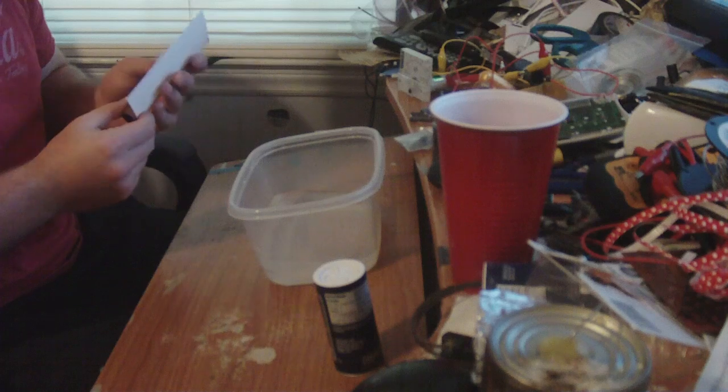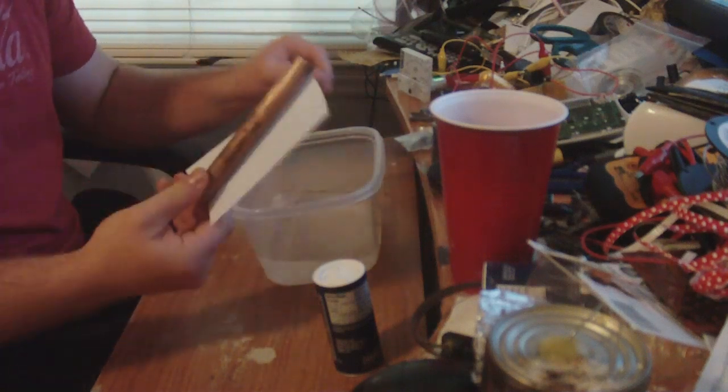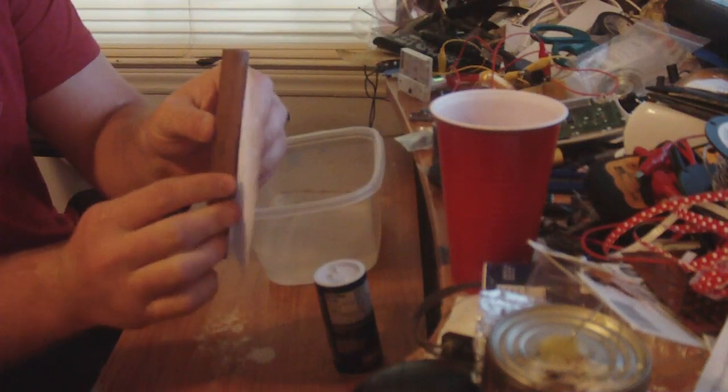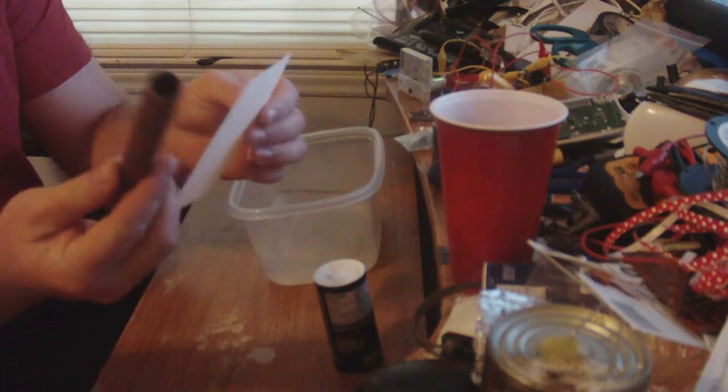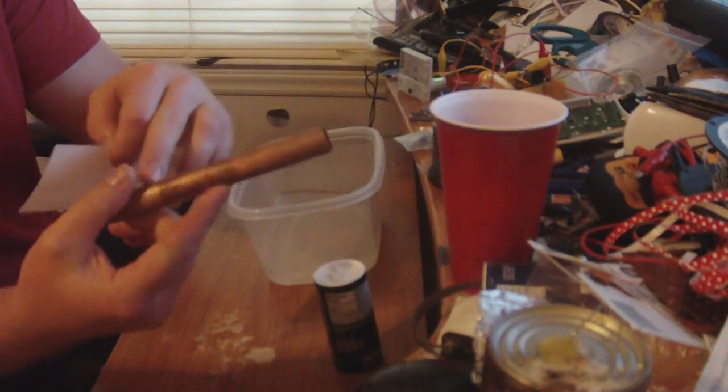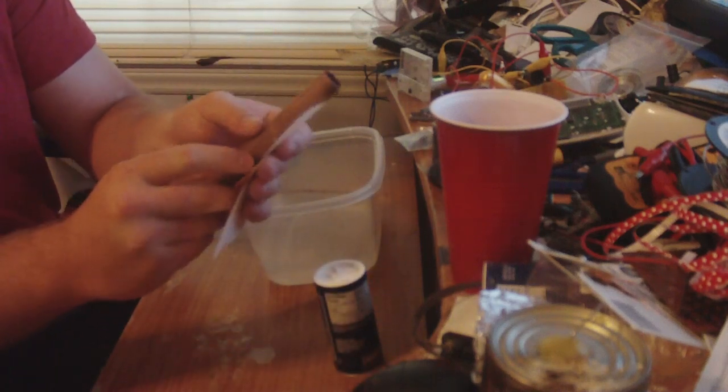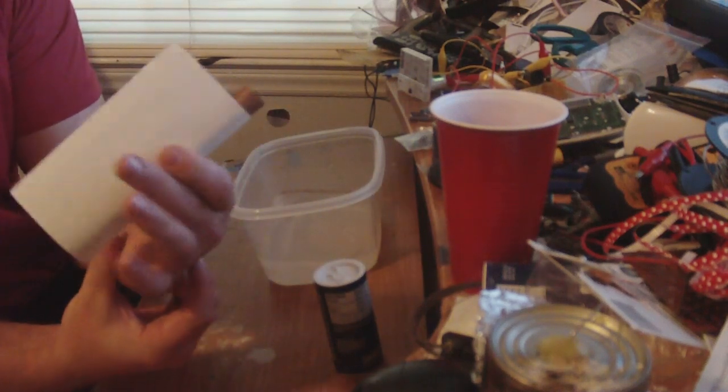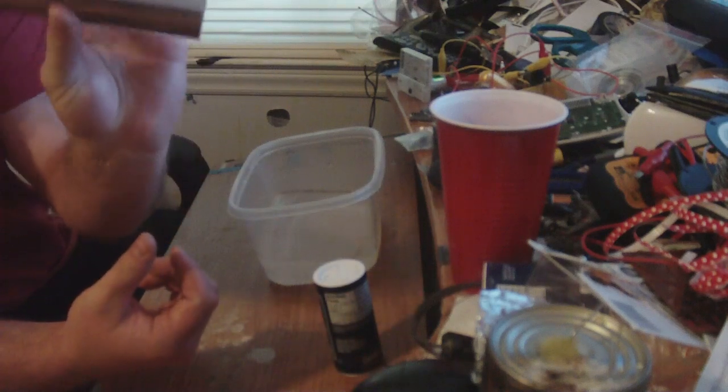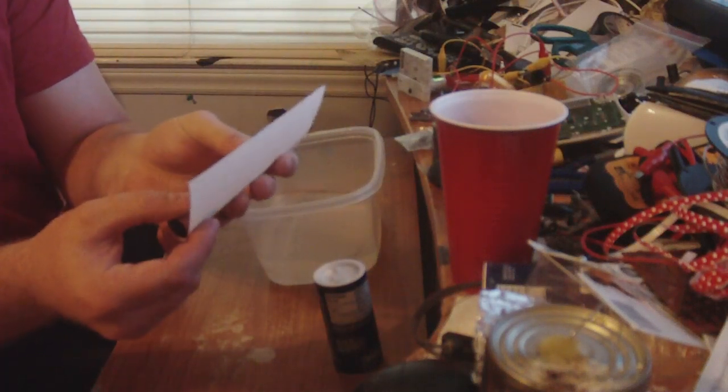Alright, you're going to need some tape too. First off, we're going to start with the cell. I'm going to take the copper tubing. This one has stickers on it. Pull the sticker off and sandpaper it down. You want to get a piece of notebook paper and cut it to shape so it will wrap around.